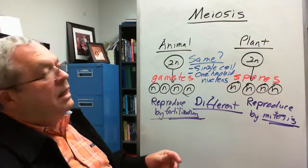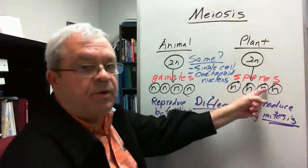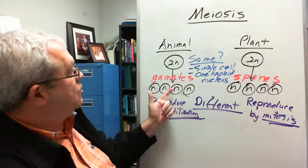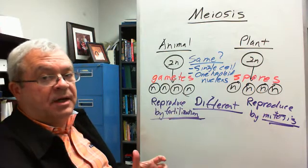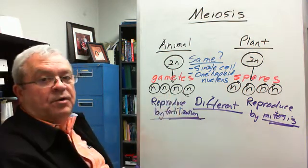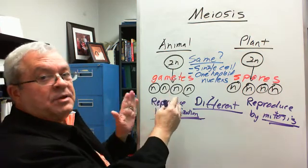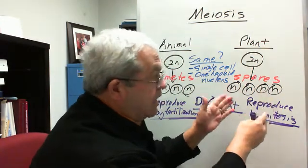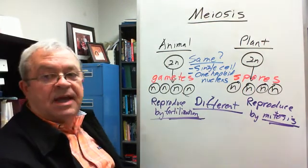And so, again, real quick, in the animal kingdom, meiosis produces what? Gametes. In the plant kingdom, meiosis produces what? Spores. How are they the same? They're both single cells, gametes and spores. They both have one haploid nucleus. How are they different? They're both reproductive cells, but they're different in how they reproduce. How do these reproduce over here? They reproduce by fertilization, with the exception of parthenogenesis, of course. But we'll just say they reproduce by fertilization, and these reproduce. No fertilization over here, not with spores, anyway. They reproduce by dividing by mitosis, haploid mitosis.